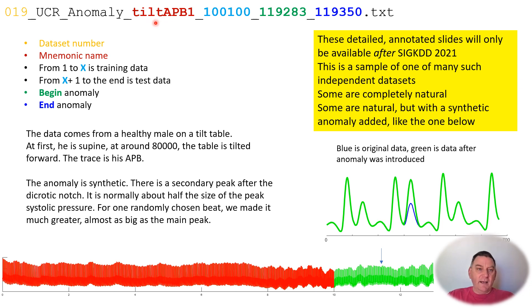In this case, tilt - tilt table - APB, arterial blood pressure. This number here is the dividing line between the training data, shown here in red, and the test data, shown here in green. And the final two numbers here are the beginning and end location of the anomaly.